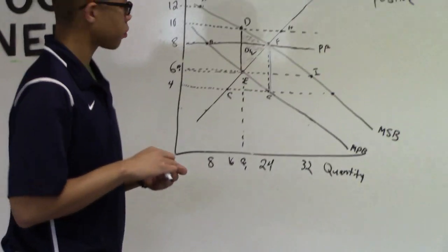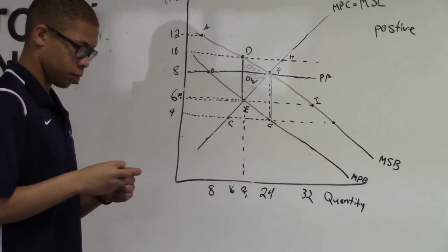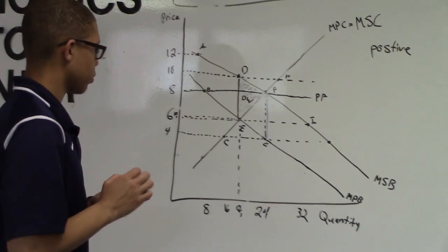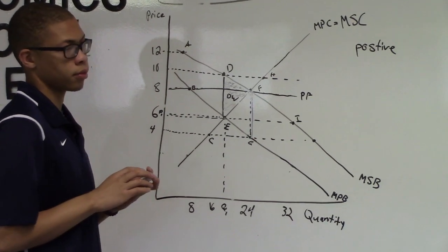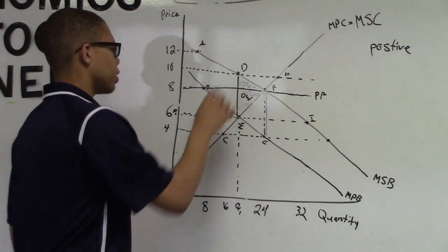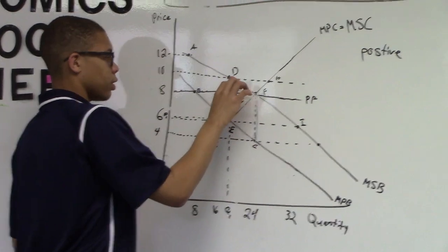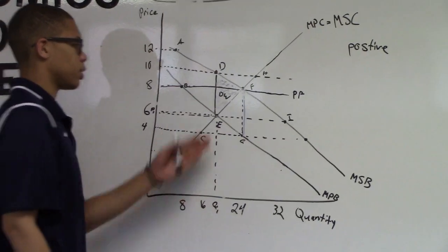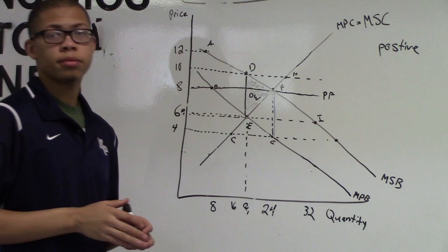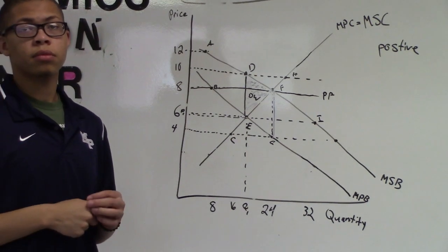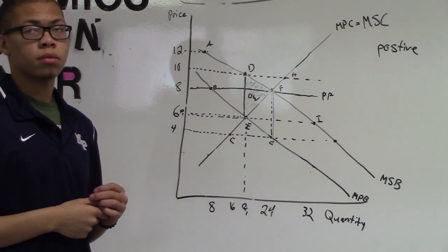Letter C. Using the labeling on the graph, identify the area representing the deadweight loss at the quantity identified in part B. At point DEF, there is a deadweight loss right here, and it's labeled here, shaded in. And they did not say explain, so you did not have to explain it. Your shaded area DEF is perfect.